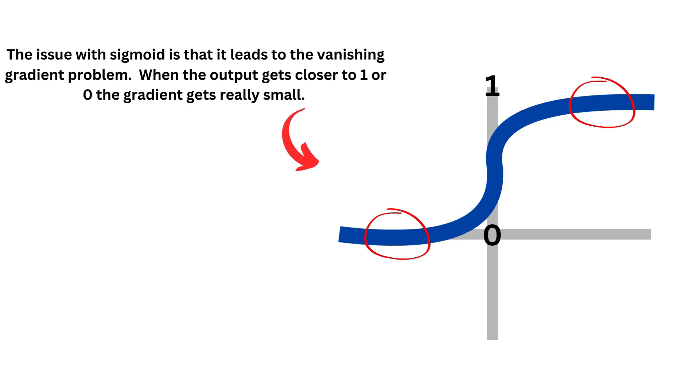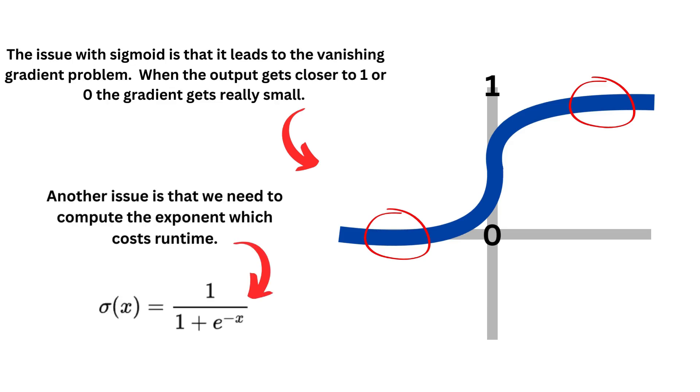When the output gets close to 0 or 1, the gradient gets really, really small. Another issue is that we need to compute the exponent, which costs some runtime.